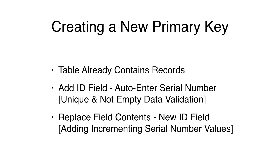You might have a situation in which you cannot figure out which field should be the primary key in an existing table. Therefore, you will need to add a new primary key field and then use Replace Field Contents to populate all of the records with incrementing serial number values.